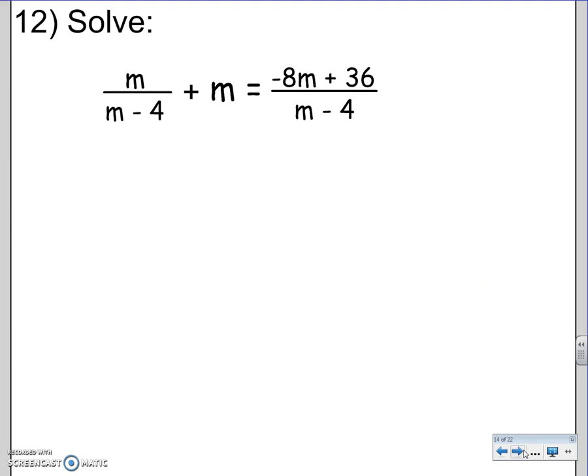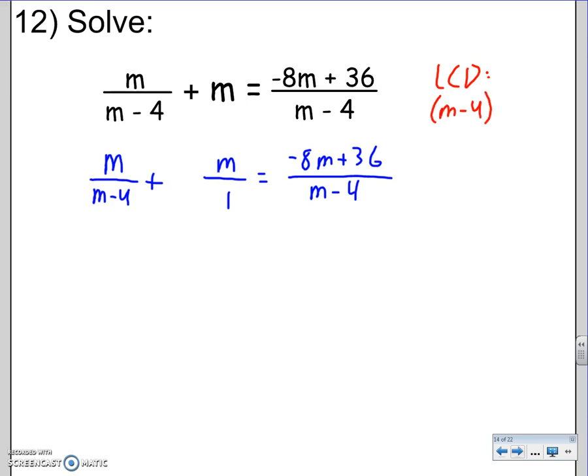12. Solve this. It's adding. I need to factor the bottoms. First one's M over M minus 4. Plus, top is M. Bottom is 1. You can make a fraction with 1. Equals negative 8M plus 36 over M minus 4. I need LCD. I need M minus 4 and 1. One's counting. The LCD is just M minus 4. First fraction is missing nothing. Second fraction is missing M minus 4. Third fraction is missing nothing.